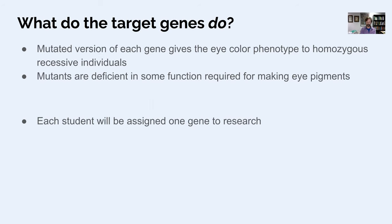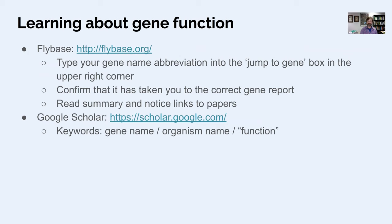Each student is going to do some research on one of the fruit fly genes — either one you're working with on your cross or a different one. That will be one of your early assignments — learning about what your gene does. One resource is Google Scholar, which you're probably familiar with. You can search using terms like the gene name, the organism name, and a keyword like "function."